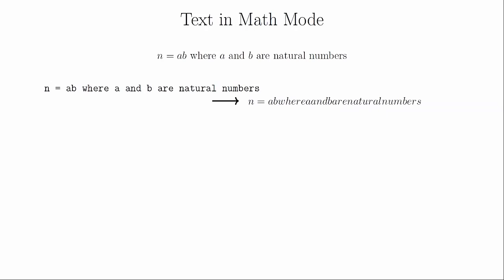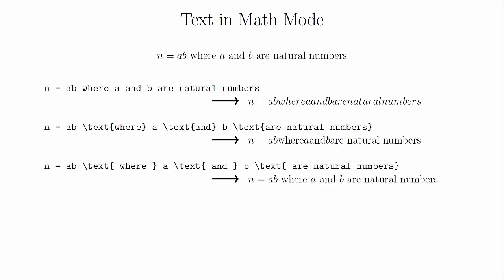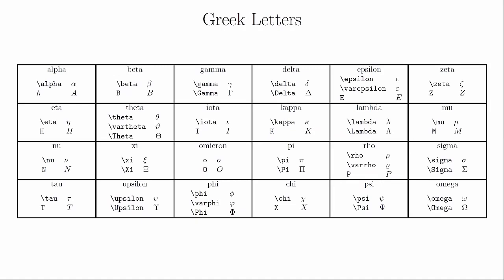If you want to write text in the middle of math mode, you cannot simply type the text — LaTeX will interpret the whole thing as a product of variables. Instead, you need to use the \text command. You need to put an explicit space at the beginning and end of the text because otherwise the letters will be placed directly next to the last mathematical symbol. It can be helpful to organize your statement in a logical manner — for example, treating an equation and a condition as separate text objects makes the code simpler and easier to read.